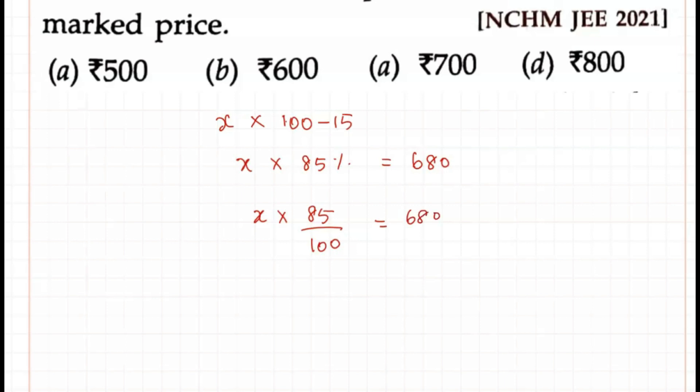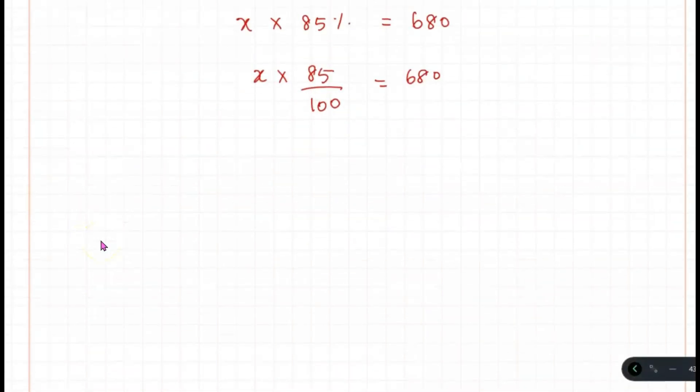So whenever it is percentage, it will be written as by 100. Rearranging this equation, X equals 680. When 100 goes to the other side it becomes multiplication, and 85 goes in the denominator.